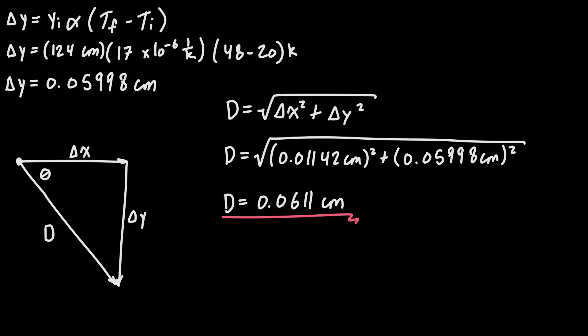Now we can use our triangle again to figure out what that angle is going to be. We'll have that the angle is going to be inverse tan of the opposite over adjacent, so that'll be inverse tan of Δy over Δx. And we plug those numbers in and we get that angle as 79.2 degrees.